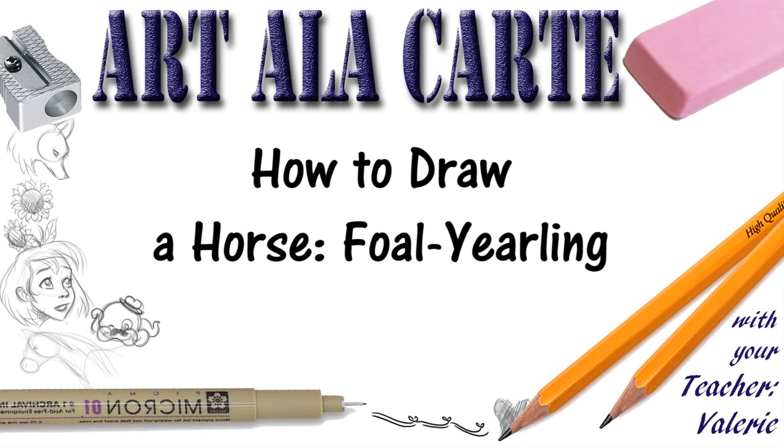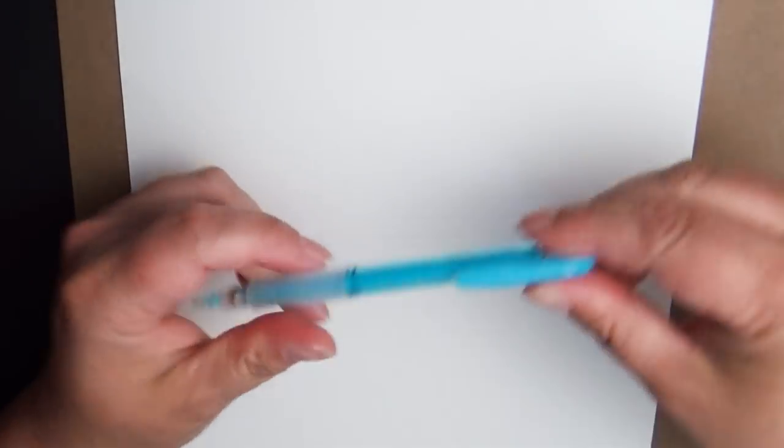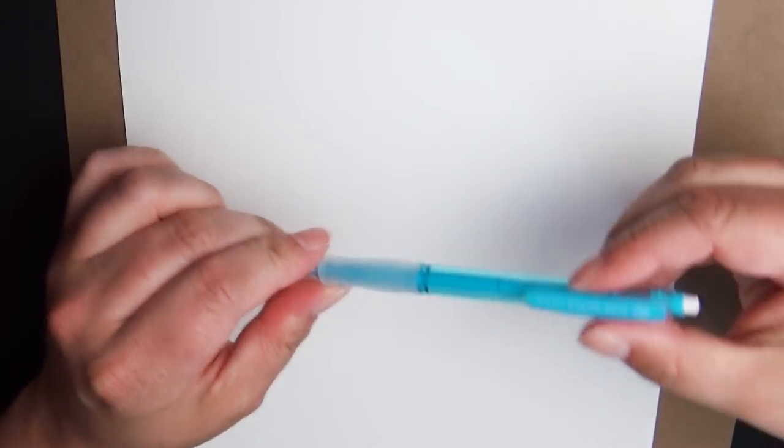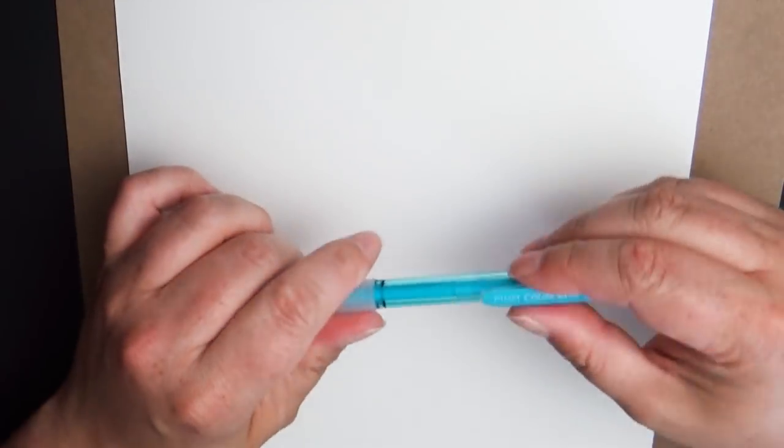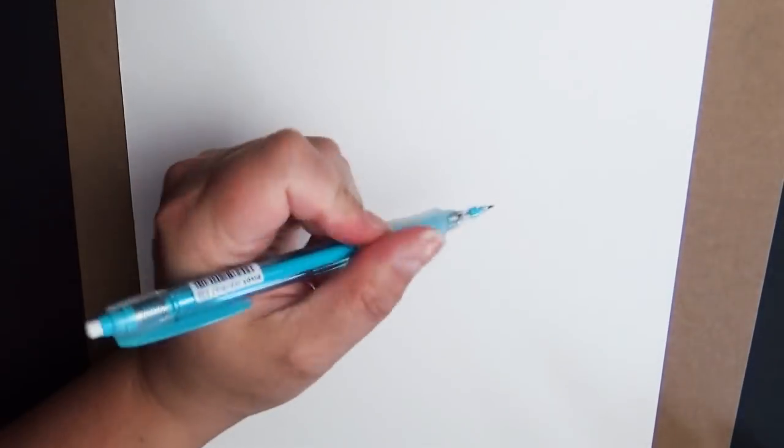Hey everyone and welcome back to Art A La Carte. In this video I'm going to be showing you how to draw a foal. So let's get started. For this you're just going to need a piece of drawing paper and something to draw with, which I'm using a blue mechanical pencil, and then if you want to ink it in like an ink pen and whatever you want to use to color it in. If you want to color it, you don't have to.